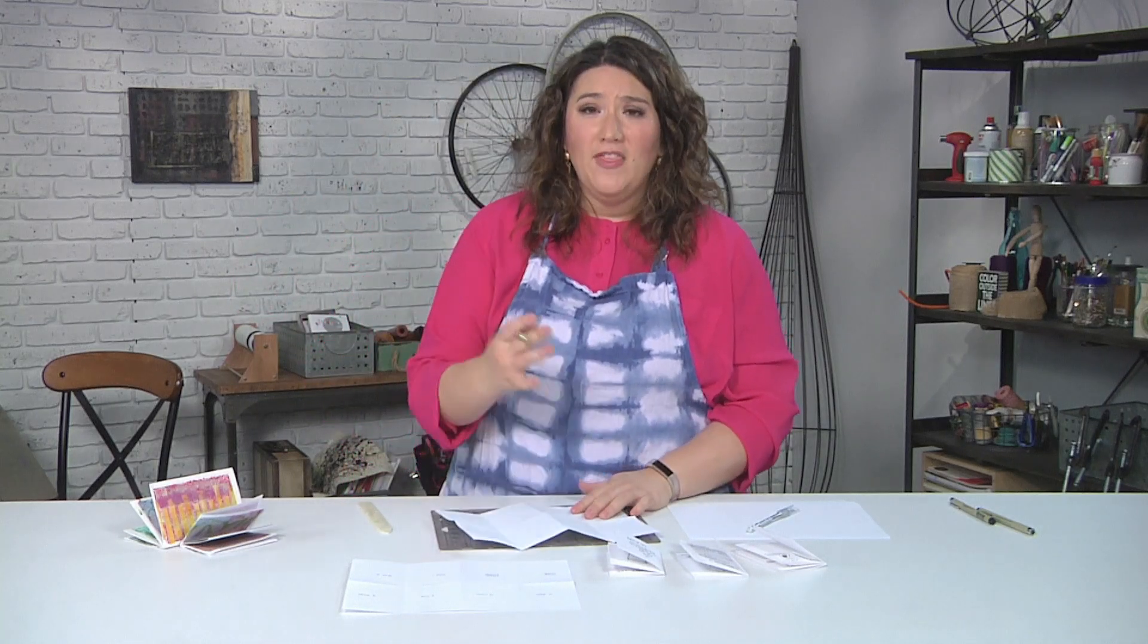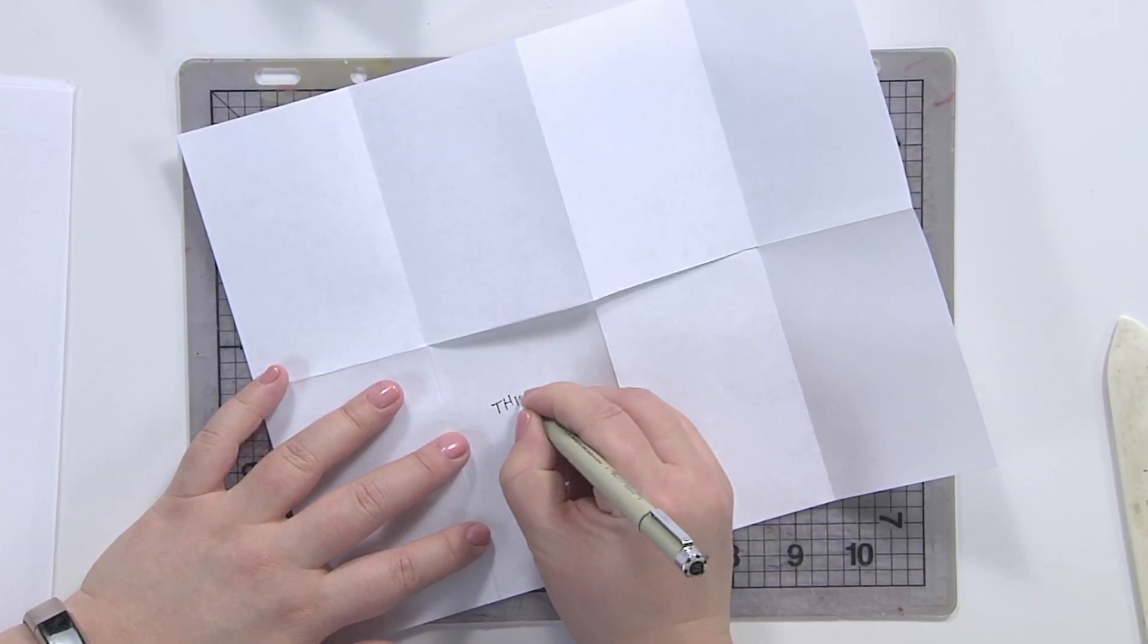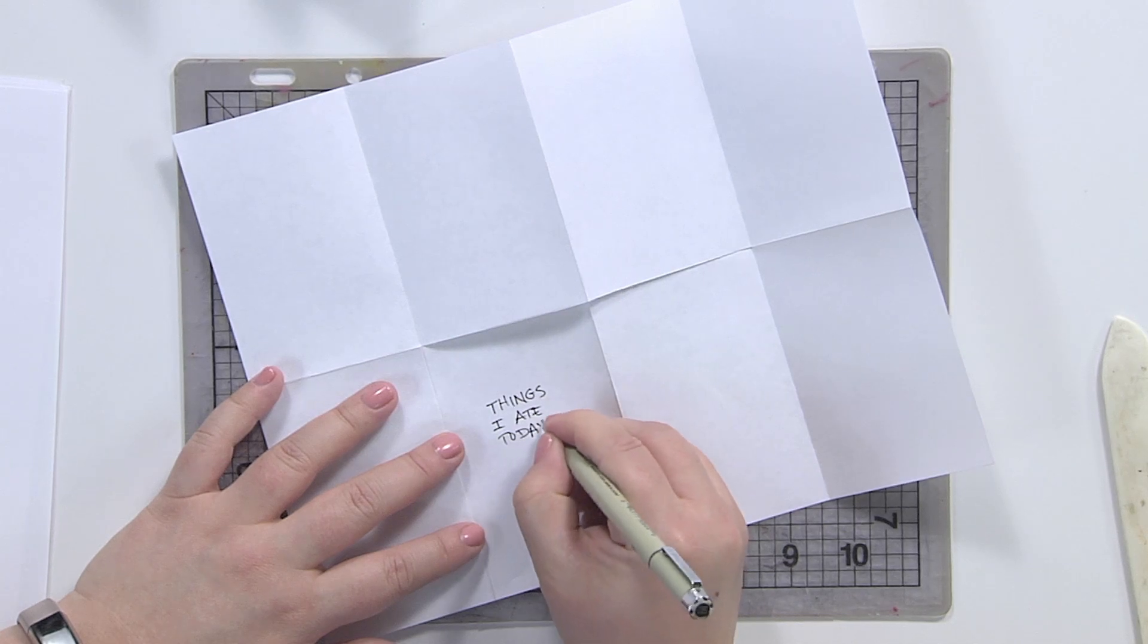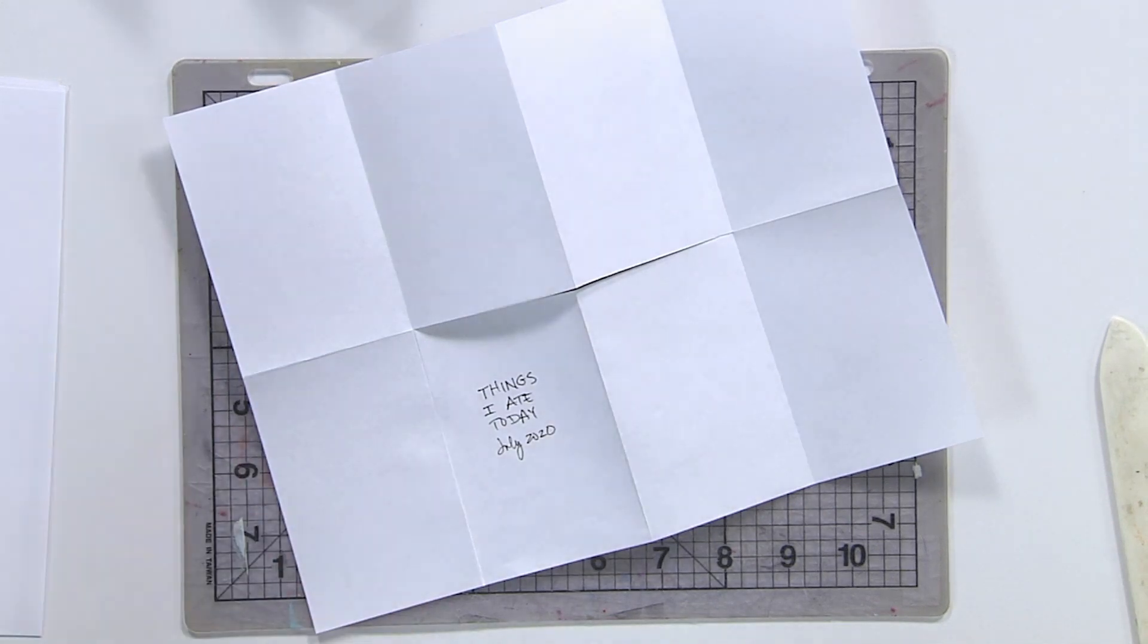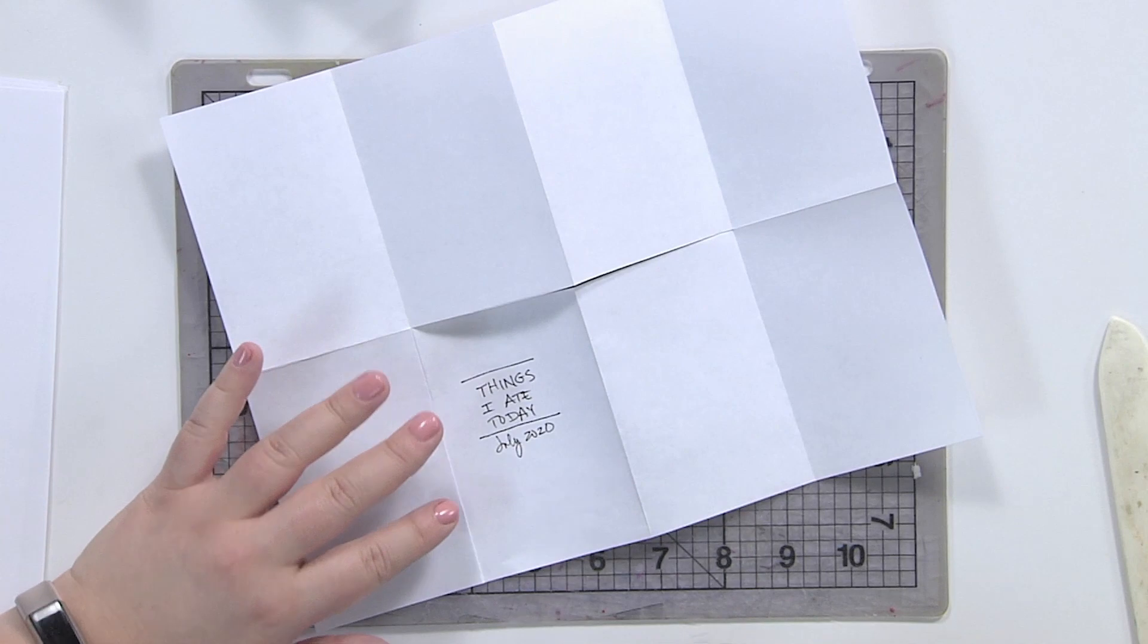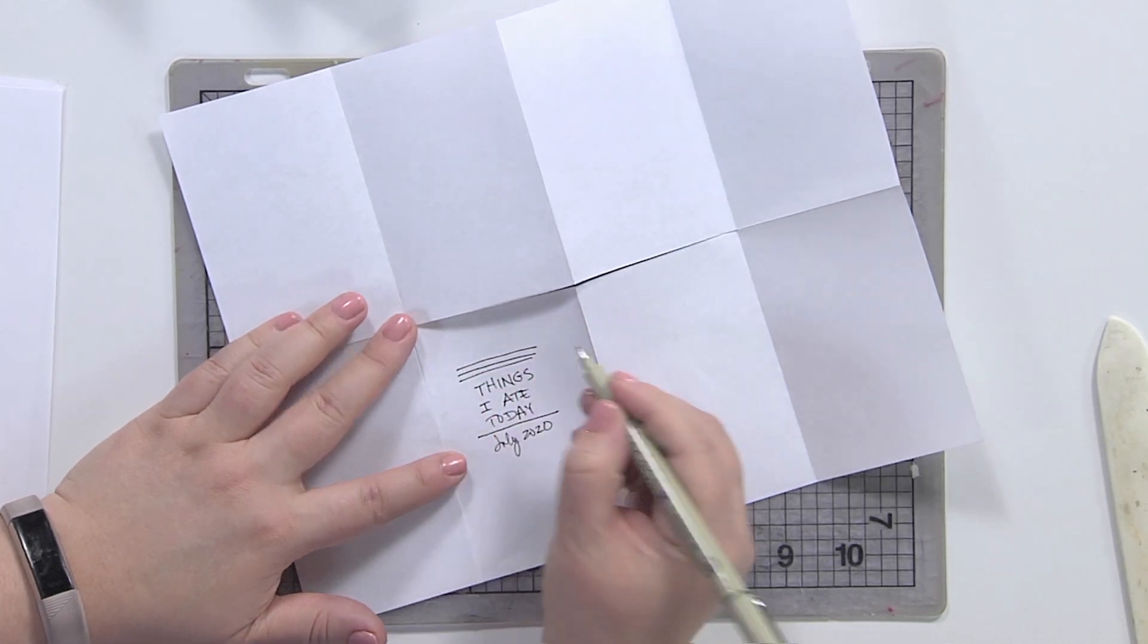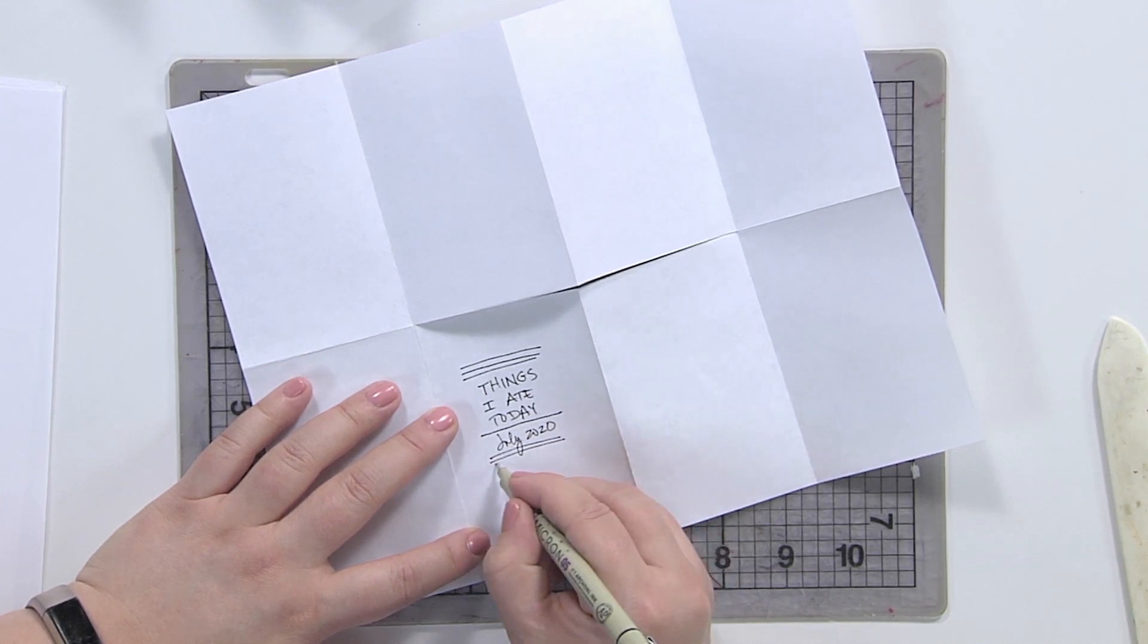So this zine could be called, Things I Ate Today. And literally, in my own handwriting, I'm just going to write out, Things I Ate Today. And then maybe date it. This is July 2020. If you want to make it fancy, you can do simple things like, look at that. I drew a line, and now it looks a lot fancier. If you want to get really fancy, I drew two lines, and I drew three lines. You know, you don't have to do a lot to make something really look great. There you go.